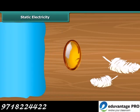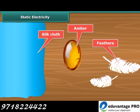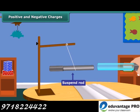Thales found that amber suspended an ebonite rod. What do you observe now? The suspended ebonite rod comes closer to the glass rod.